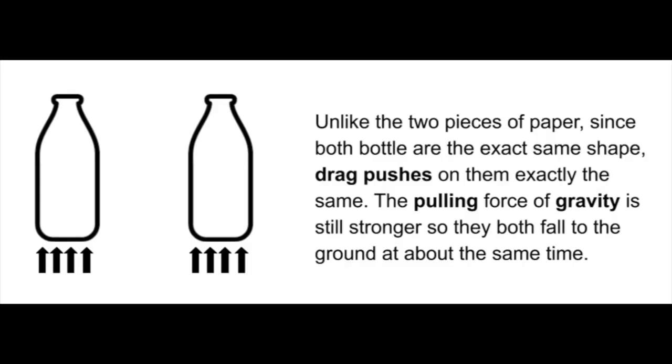This diagram shows why the two bottles fell at the same speed. Obviously, it didn't matter about mass. One weighed way more than the other. It has to do with the shape. And in this instance, these two bottles are the exact same shape. And that means that gravity is pulling on them the same, and drag was pushing on them the same.